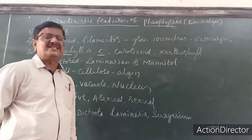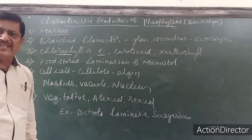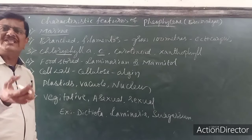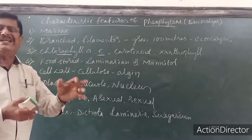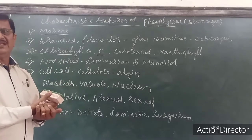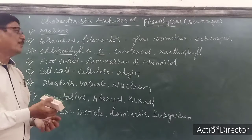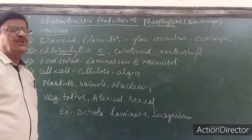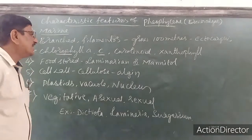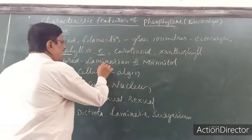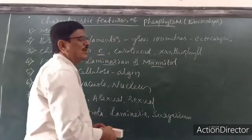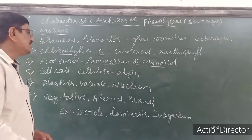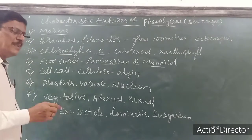The photosynthetic pigments are chlorophyll A and C, carotenoid and xanthophyll. The food produced in photosynthesis is stored as carbohydrates — specifically laminarin or mannitol. Usually mannitol is the stored food product.